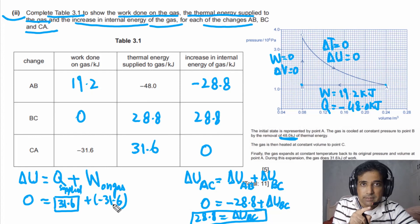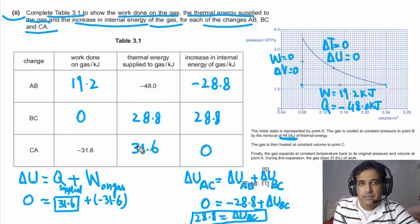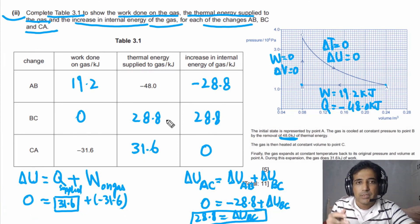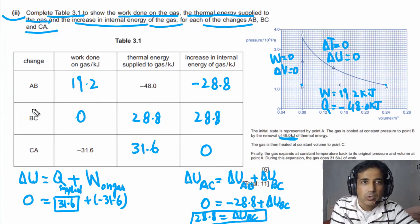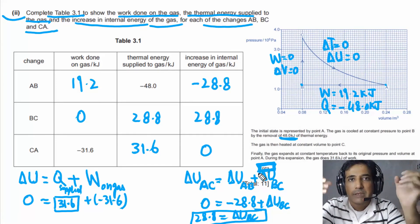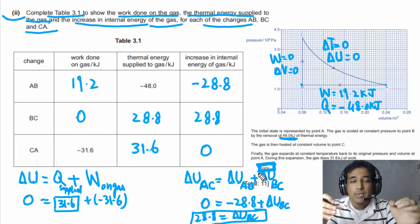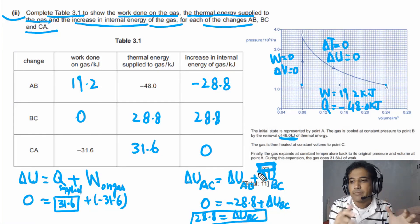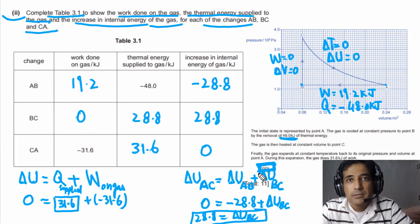Work done on gas is negative in this expansion, so heat must be supplied. You can verify this directly from the first law equation. If you got all these values correct, you will get 5 marks — this question has 5 marks in total. I have explained this question in detail. If you still have any doubts or questions, please leave them in the comments and I will answer as soon as possible.